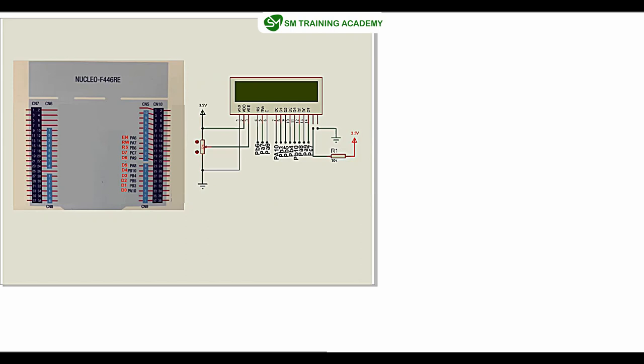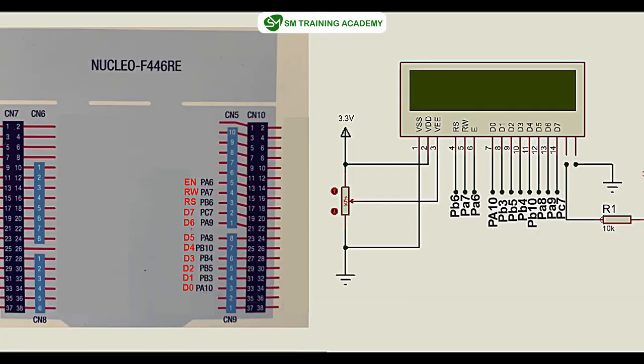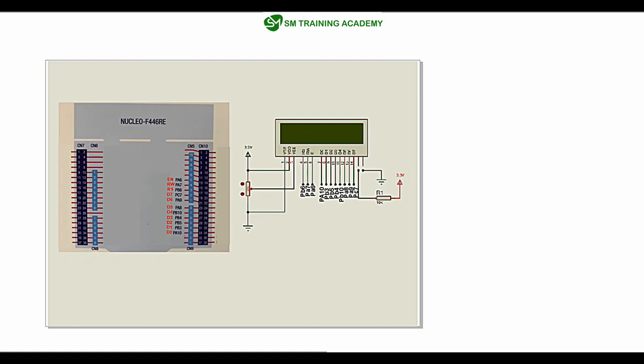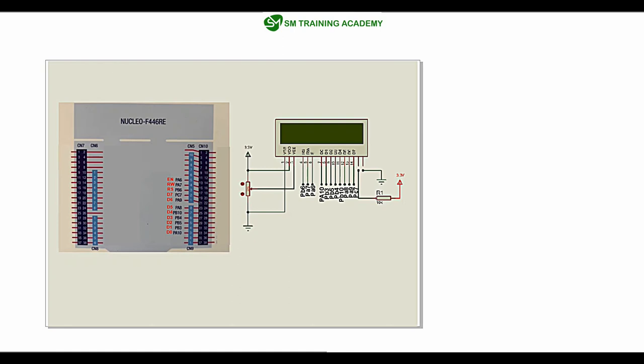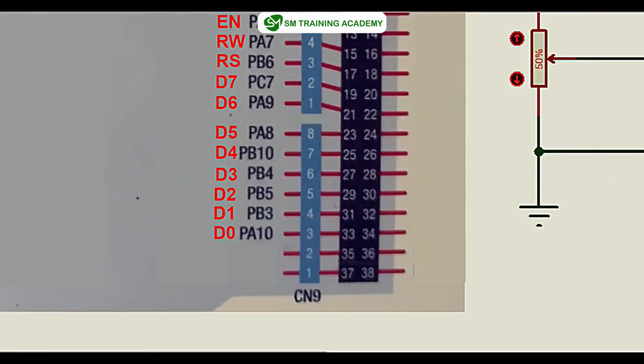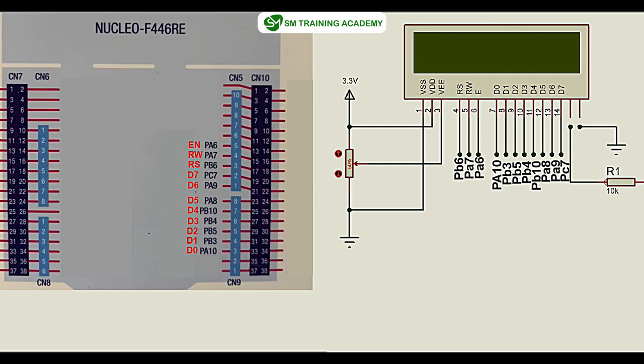So this is the schematic diagram for interfacing the LCD in 8-bit mode with the STM32 F446RE microcontroller. Let us now discuss the configuration part — we need to configure all these pins as outputs in the CubeMX software. That includes the data lines D0 to D7 and the pins RS, RW, and Enable as digital output pins for interfacing this LCD.